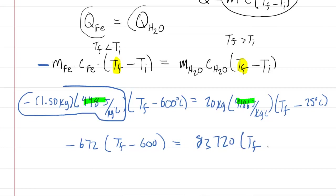And then what we have to do is distribute here. So we're going to multiply the negative 672 into the parentheses. This gives us negative 672 times the final temperature. And then negative 672 times negative 600 is 403,200. Similarly, we'll distribute the 83,720. So we'll have 83,720 times the final temperature minus an 83,720 times 25 is 209,300.